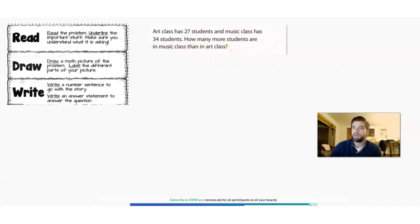So let's underline the important parts of that after we read it. We know art class has 27 students. That's going to be important. We also know music class has 34 students.